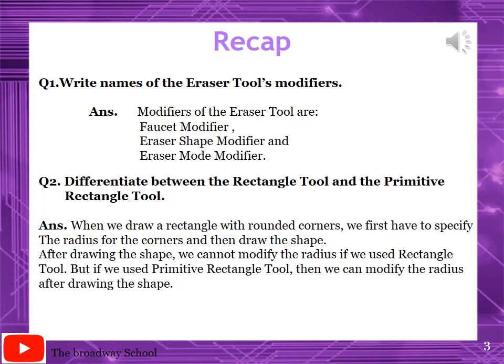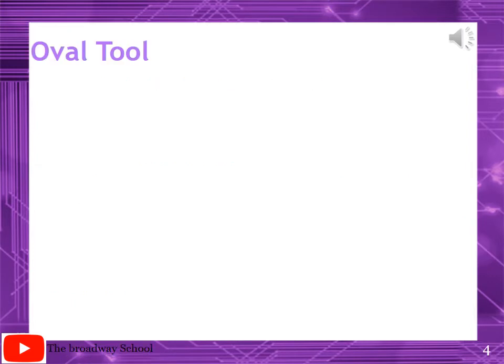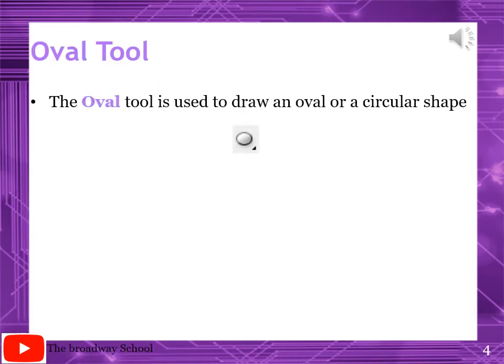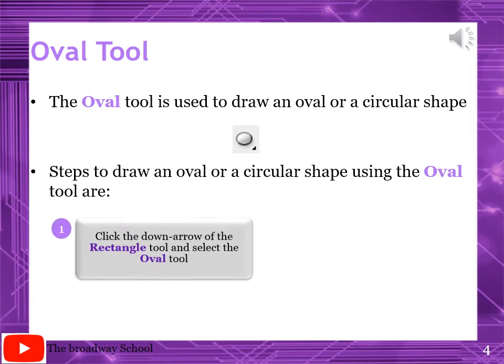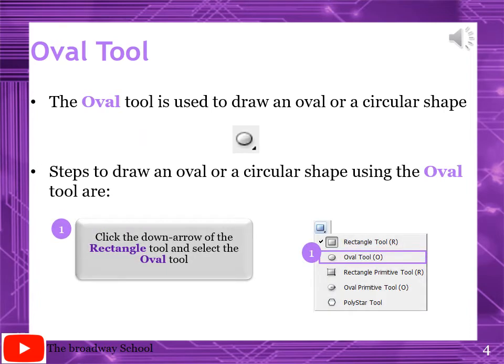Recap: write names of the eraser tool modifiers. Answers are written, you can check your spellings. Difference between the rectangle tool and the primitive rectangle tool - you can check your spellings as well. Open page number 137: Oval Tools.